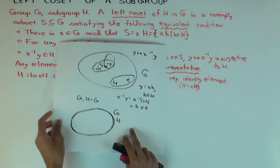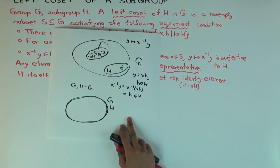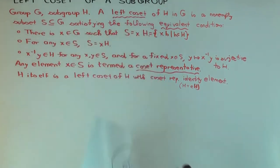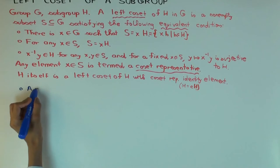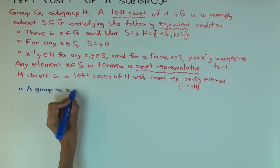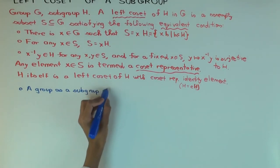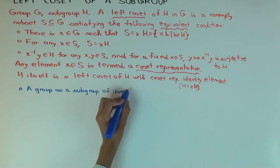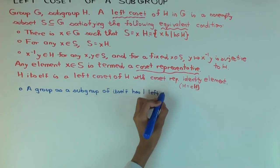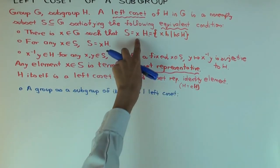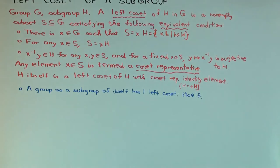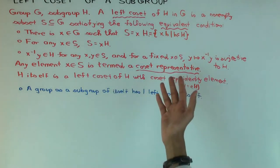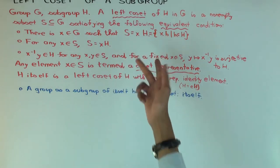Now let's look at the other extreme. The smallest possible subgroup is the trivial subgroup, which is just the one-point set containing the identity. By the way, the reason we say 'left' coset is because the element is being multiplied on the left. There's also a thing called a right coset where the subgroup is on the left and the element is on the right.